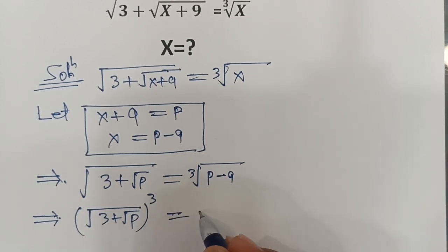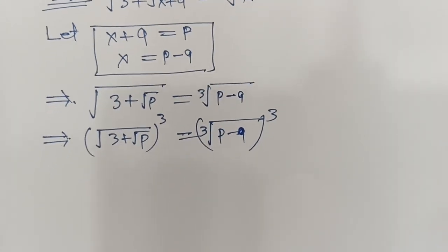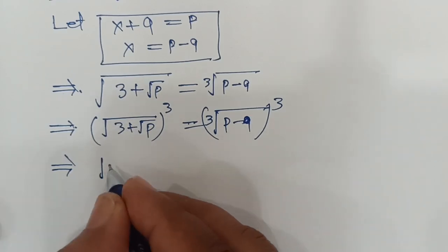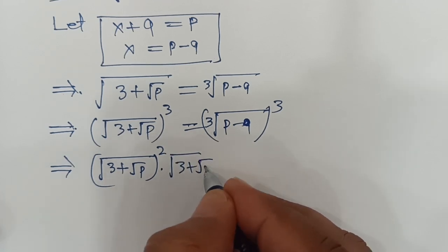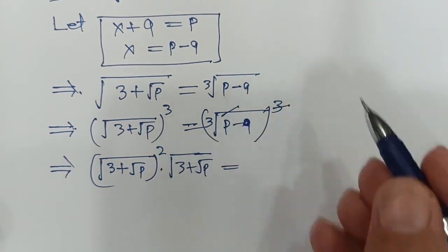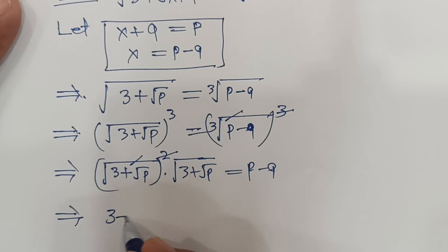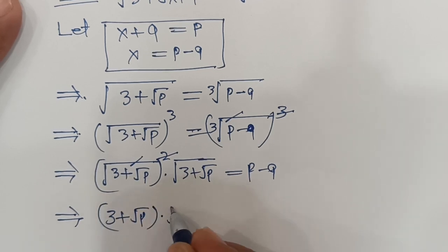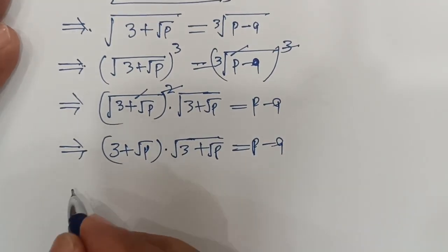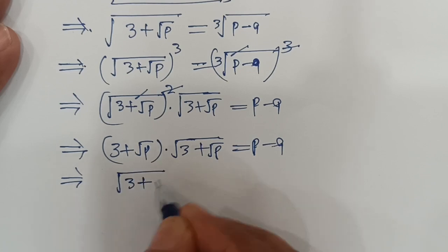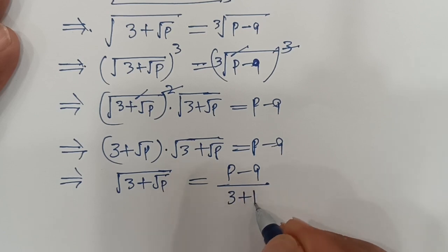Now, cubing both sides gives us p minus 9. This can be written as: square root of (3 plus square root of p) squared, times square root of (3 plus square root of p), equals cube root of (p minus 9). This simplifies so that (3 plus square root of p) equals (p minus 9) divided by (3 plus square root of p).